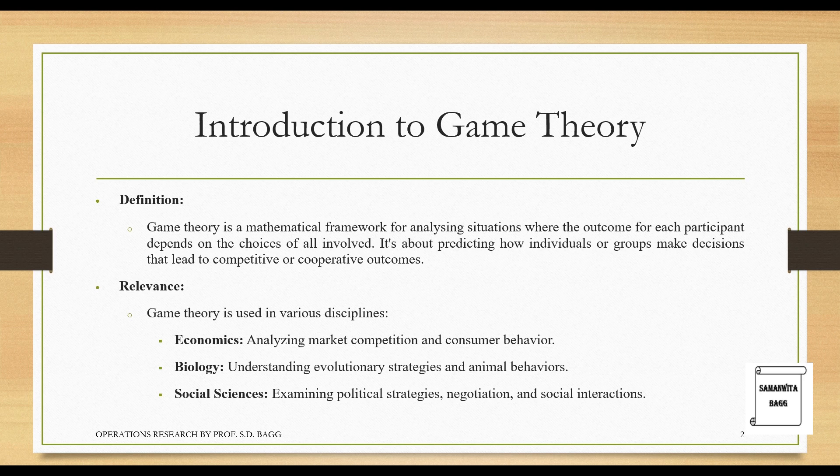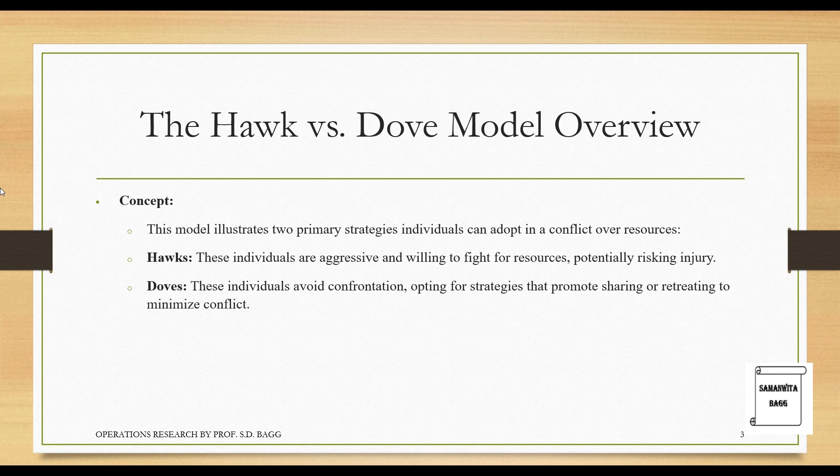We have discussed all this in detail in previous lectures. Game Theory is used in various disciplines — Economics, Biology, Social Sciences — just a few to name. There is also Political Science, Machine Learning, and everyday life. Examples like playing chess or rock, paper, scissors — everywhere you make use of Game Theory.